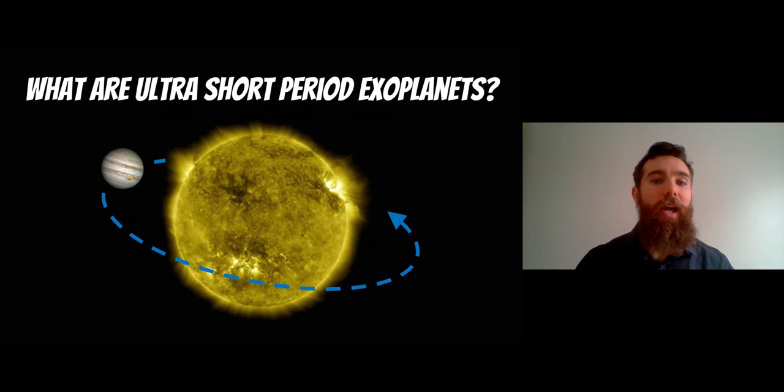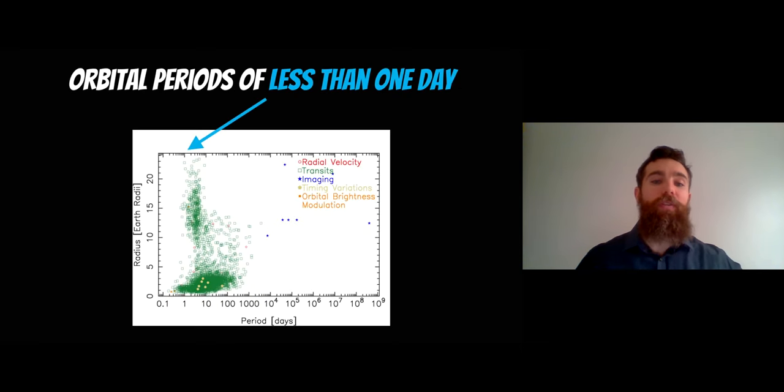Welcome to this video where we're going to have a look at ultra short period exoplanets and what they actually are. So this is a plot of the currently confirmed exoplanets and it's the radius of the planet against the period.